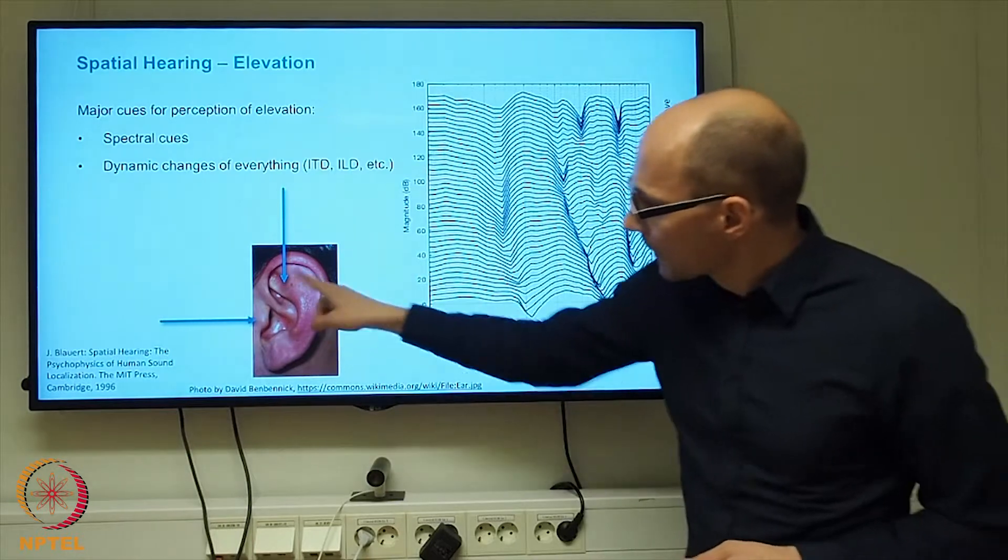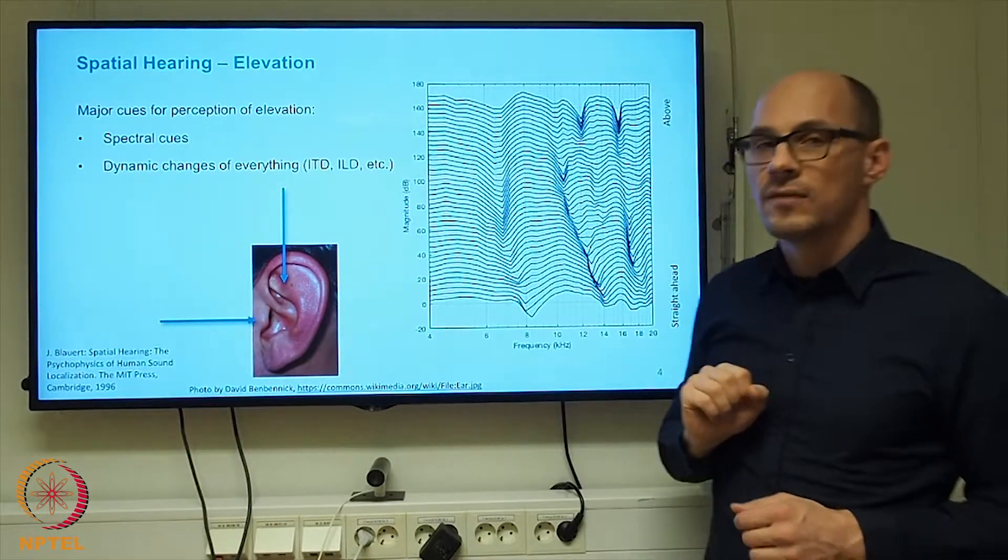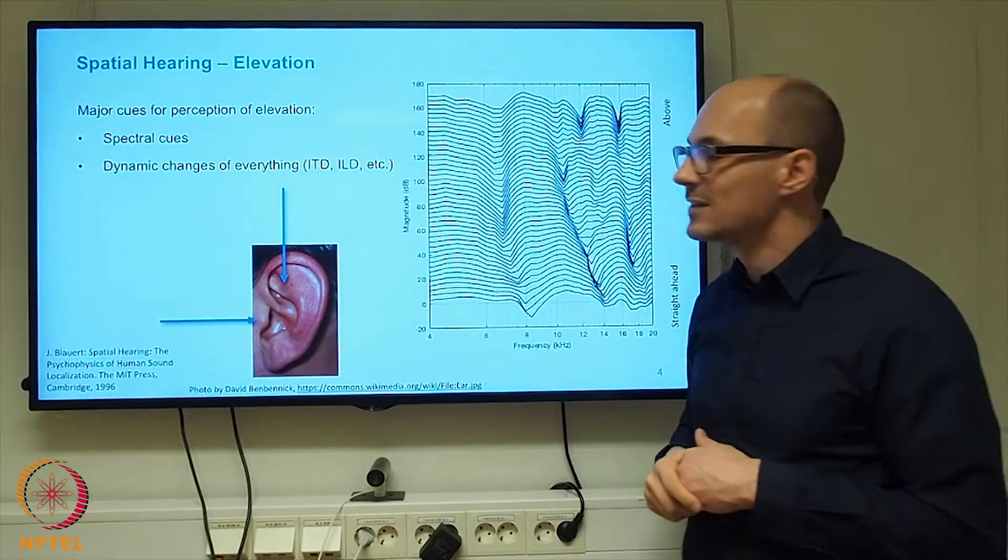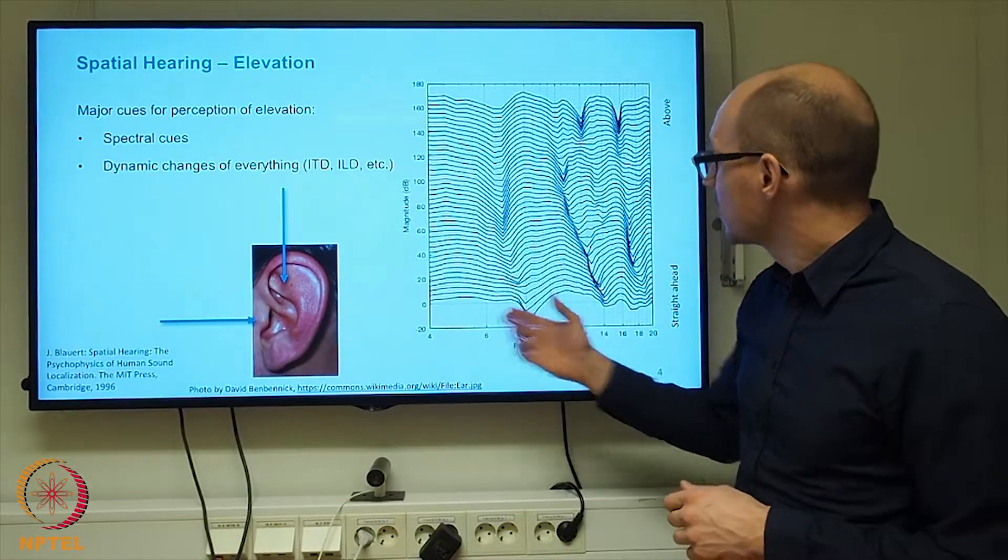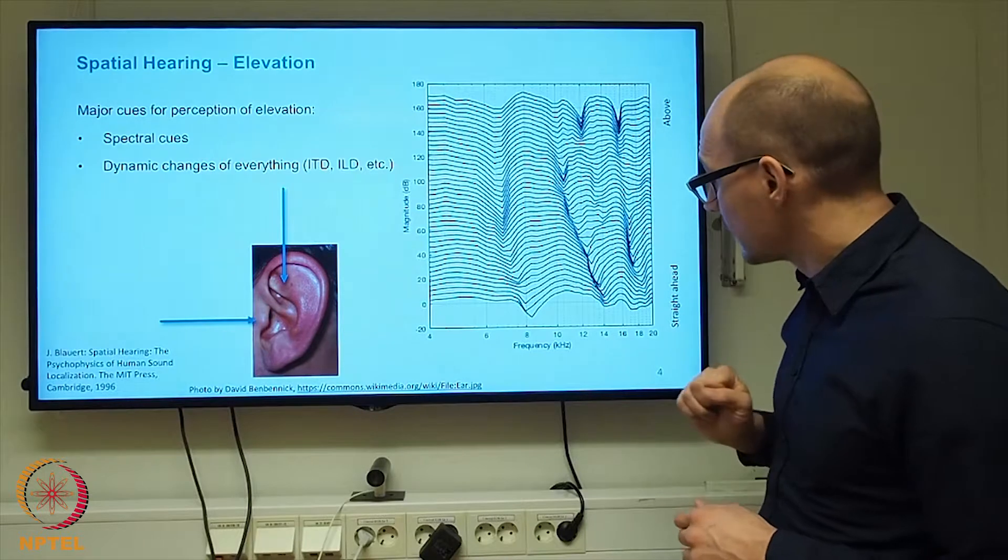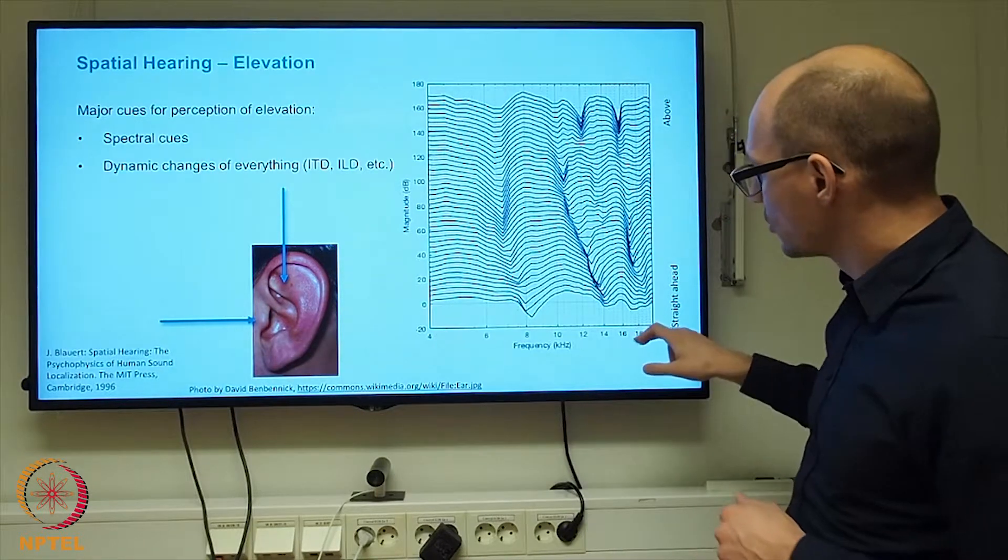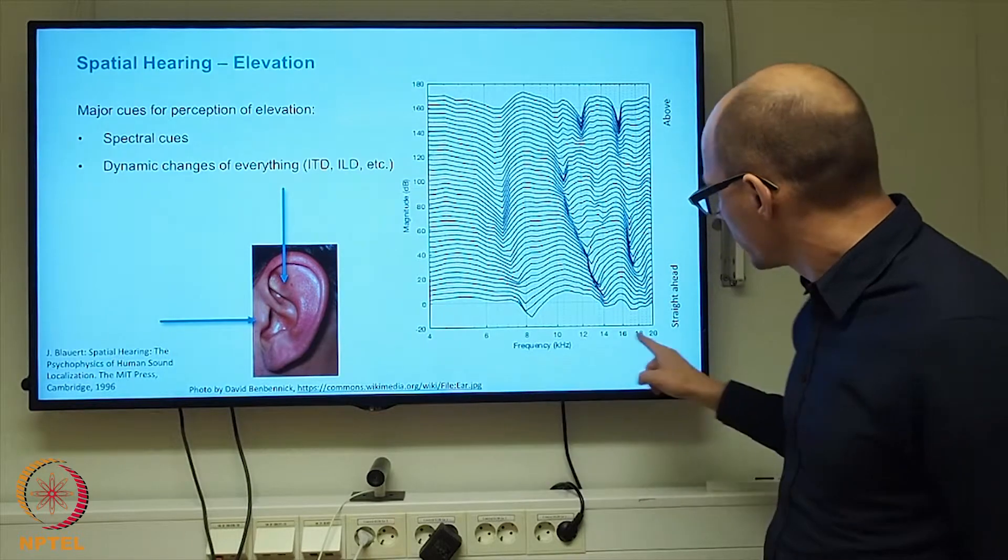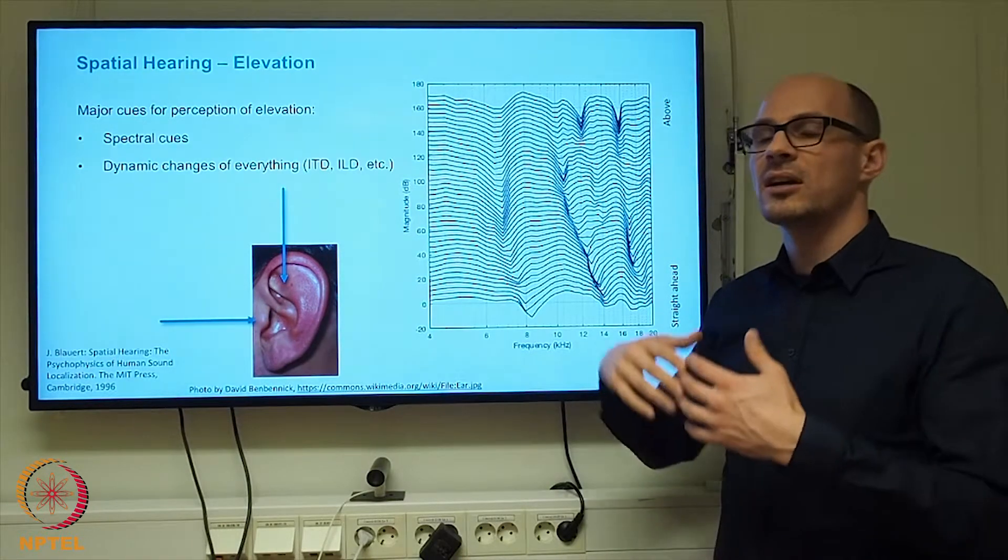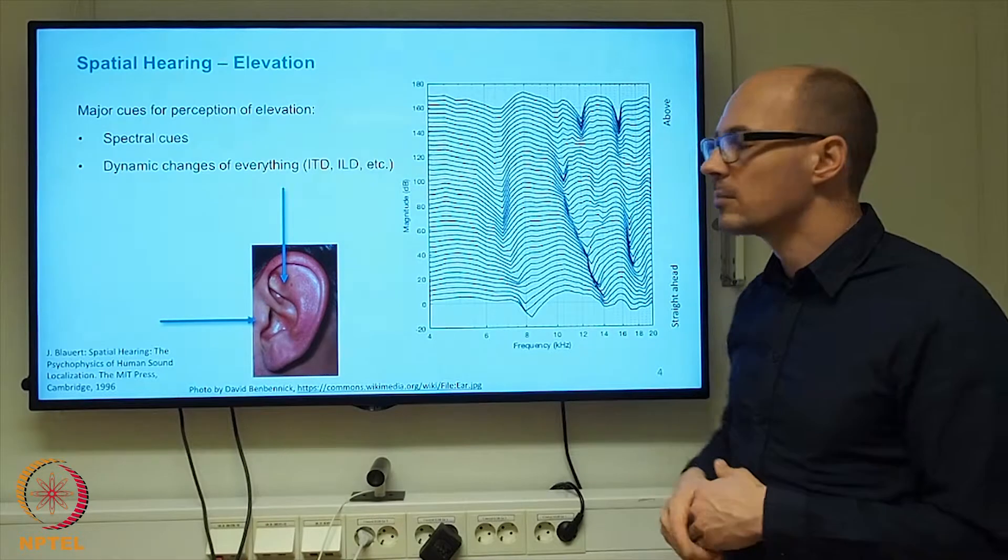The fact that the acoustic influence of the body on the signal that arises at the ears is systematic is illustrated in this chart. On the horizontal axis you see the frequency. The range is 4 kHz to 20 kHz, so we are looking at the higher part of the audible frequency range.